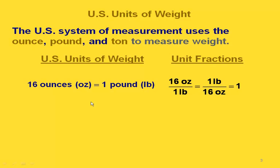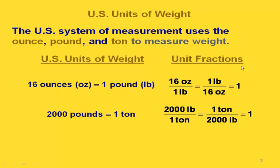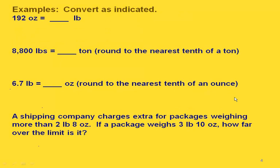16 ounces is the same as one pound, so here are the two unit fractions that would go with that. 2,000 pounds is equal to one ton, so here are the two unit fractions that would go with pounds and tons. Let's do some examples of converting from one unit to another within the U.S. system.